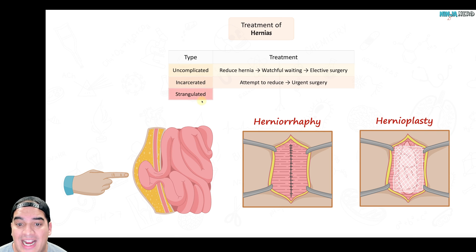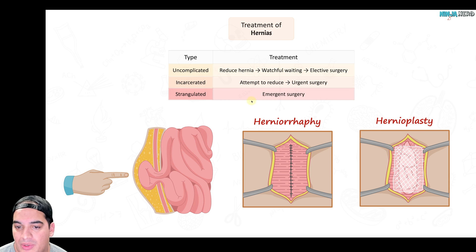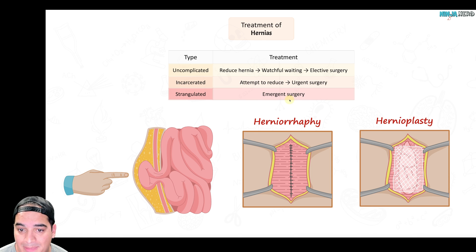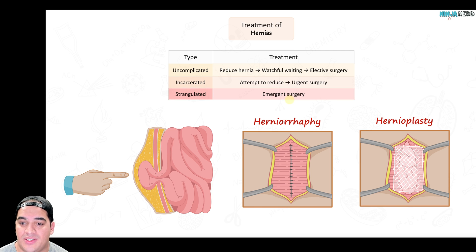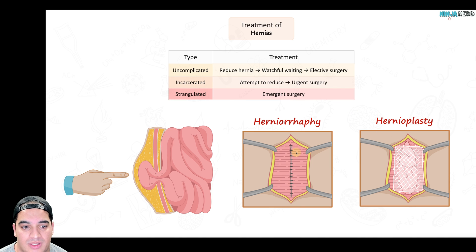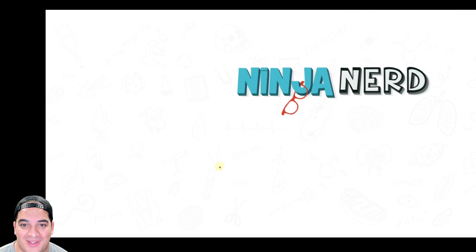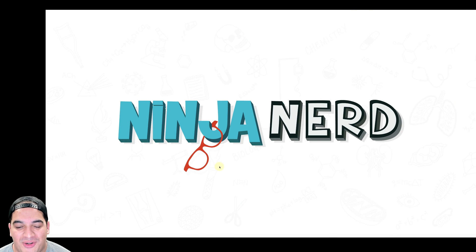If the hernia is strangulated — causing bowel ischemia or bowel obstruction — do not attempt reduction. The patient needs emergency surgery due to high risk of perforation and sepsis. The surgeon may resect the diseased portion of bowel, perform an end-to-end anastomosis, and close the area with either a hernioplasty or herniorraphy. That covers hernias.